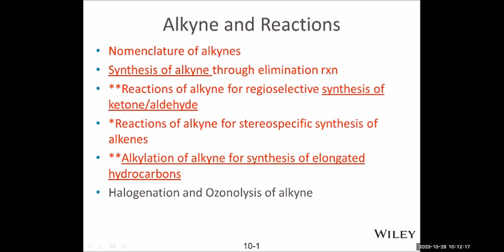The alkyne has one very interesting part: the terminal alkyne is acidic — it has a hydrogen that is more acidic. So we can turn that into a nucleophile by forming the salt of such acidic hydrogen, the acidic alkyne. Forming the salt, which is the conjugate base of the alkyne, this conjugate base can also act like a nucleophile. So we can use this to attack another carbon center with a leaving group and make an even longer carbon chain, which becomes useful in synthesis.